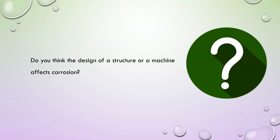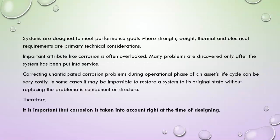Do you think the design of a structure or a machine affects corrosion? Systems are designed to meet performance goals where strength, weight, thermal and electrical requirements are primary technical considerations. An important attribute like corrosion is often overlooked. Many problems are discovered only after the system has been put into service. Correcting unanticipated corrosion problems during the operational phase of an asset's life cycle can be very costly, and in some cases it may be impossible to restore a system to its original state without replacing the problematic component. Therefore, it is important that corrosion is taken into account right at the time of designing.